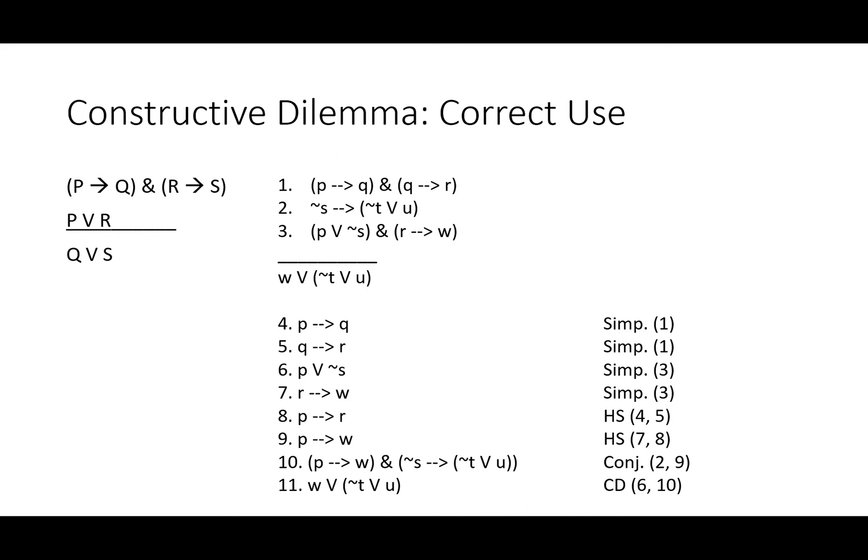And there we have it. We've got P, we've got not S, and those will lead us to the choice between either W or either not T or U. That didn't end up being that hard. Constructive dilemma was the only really difficult rule we needed to use, and given all the information we processed, doing this in only 11 lines is pretty good. Constructive dilemma is as powerful in regular logic as it is in your real life.